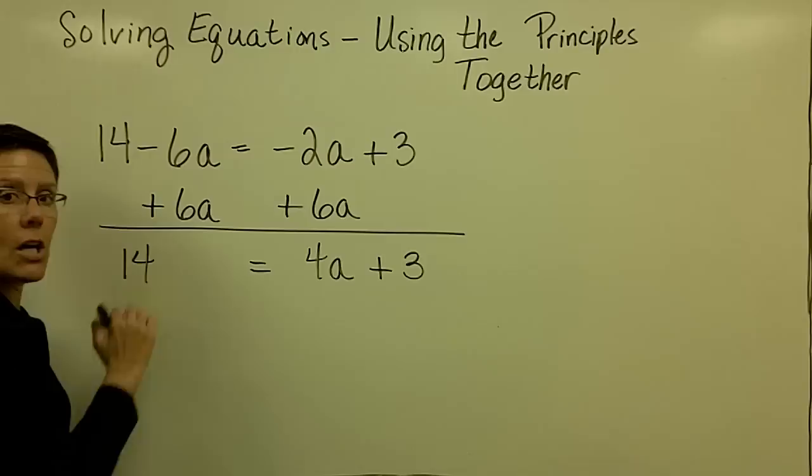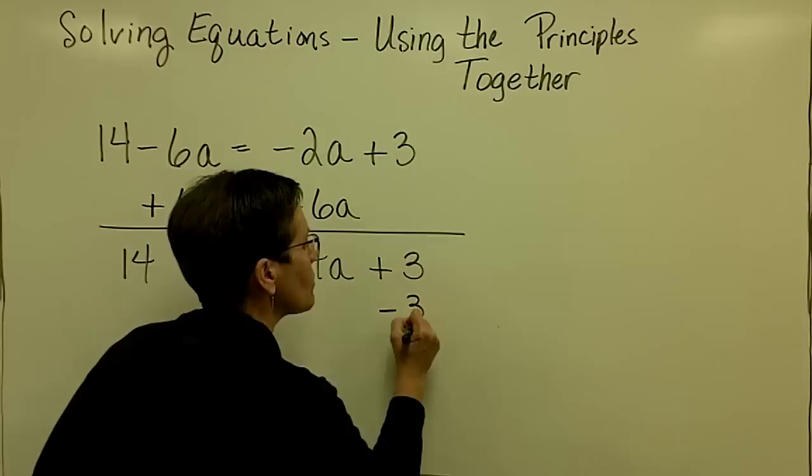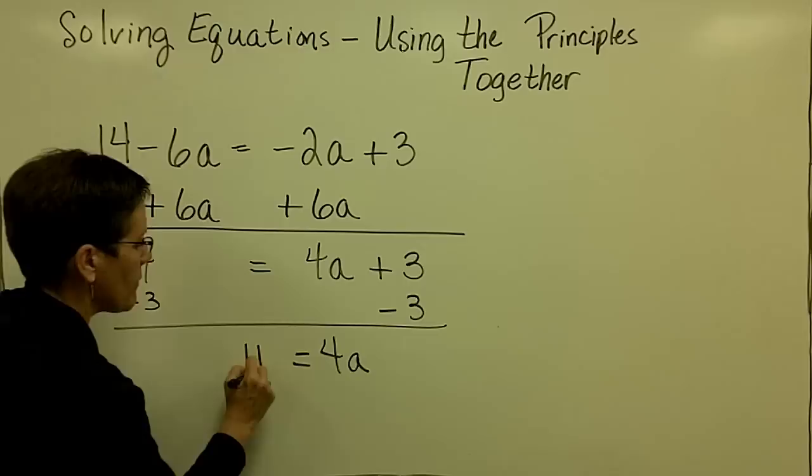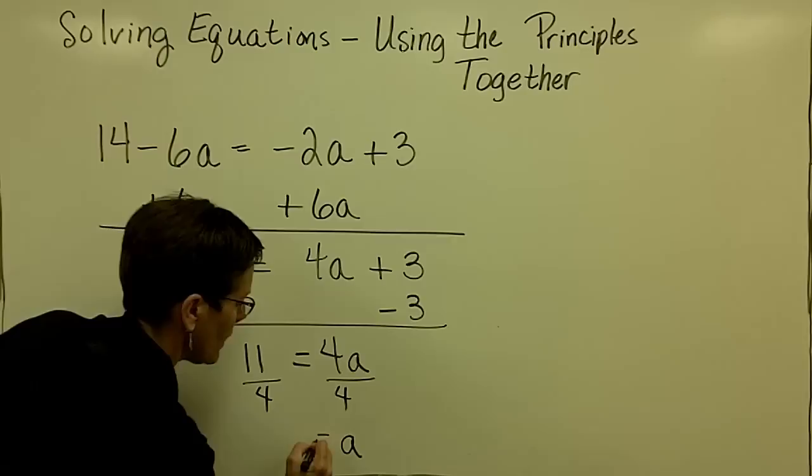Now I have to isolate the variable term. I have to isolate the 4a. So I'm going to subtract 3 from both sides and I'll have 4a equals 11. And then I'll divide both sides by 4 and I'll have a equals 11 fourths.